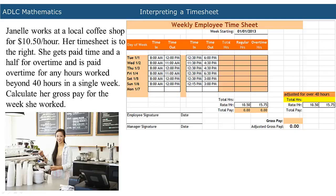In this video, we will be completing timesheets. Janelle works at a local coffee shop for $10.50 per hour. Her timesheet is to the right. She gets paid time and a half for overtime and is paid overtime for any hours worked beyond 40 hours in a single week. Calculate her gross pay for the week she worked.